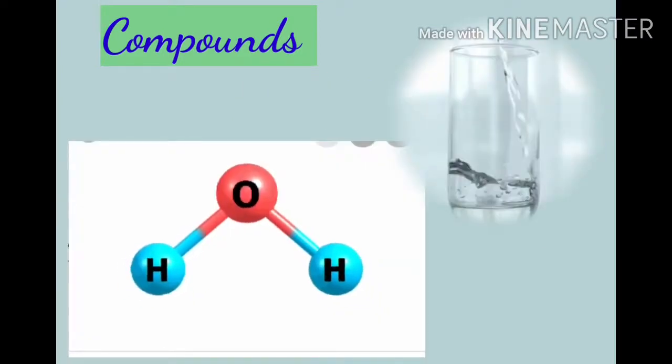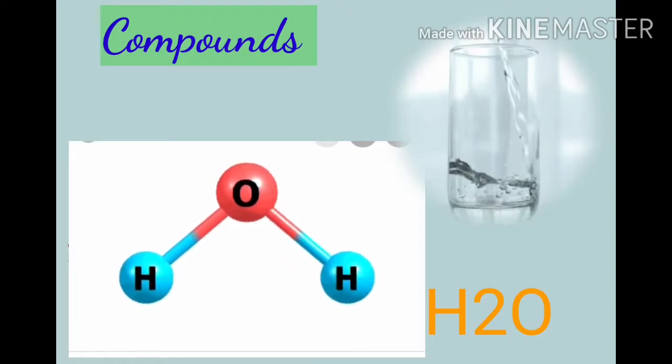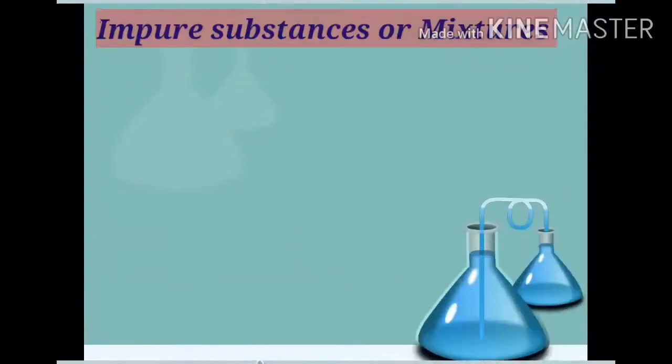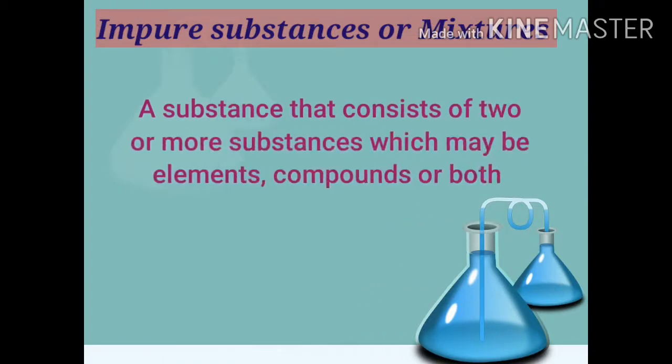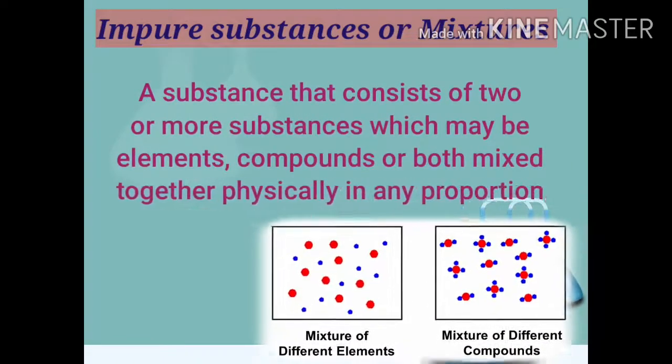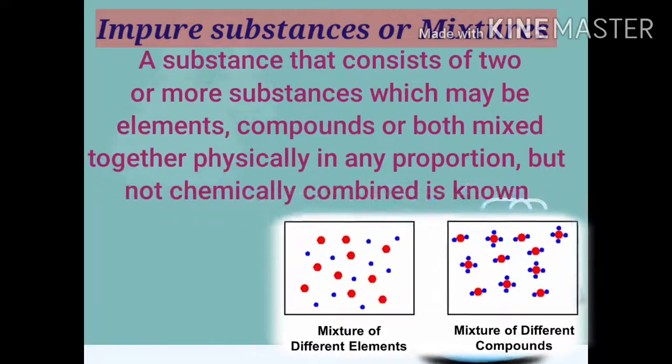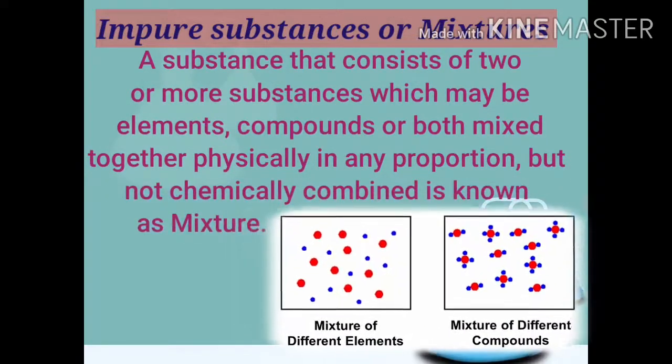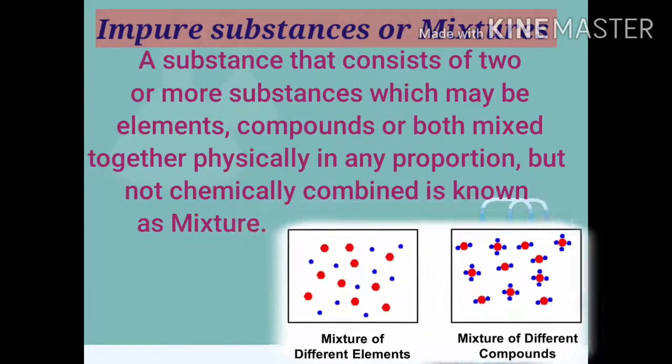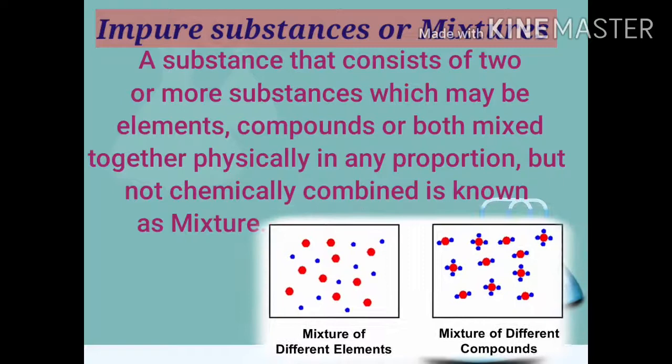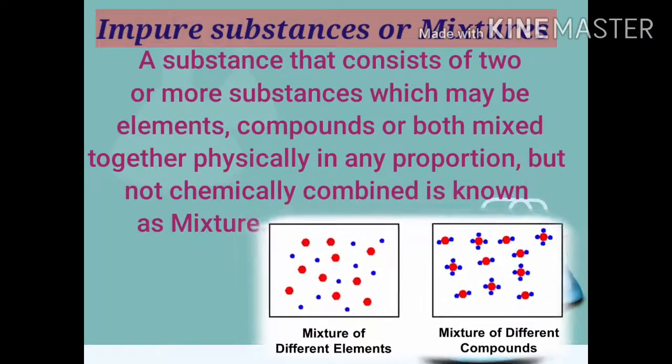For example, water is a compound made up of two elements: hydrogen and oxygen, H2O. Now let's see what are impure substances or mixtures. A substance that consists of two or more substances, which may be elements, compounds, or both, mixed together physically in any proportion but not chemically combined, is known as a mixture.